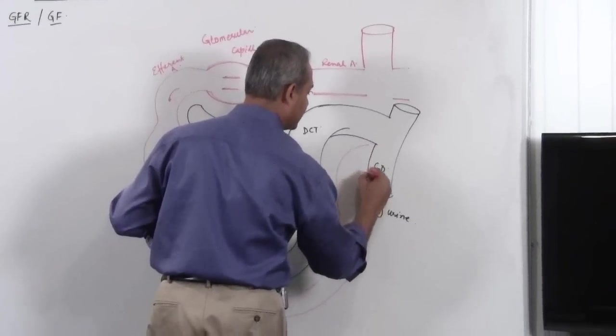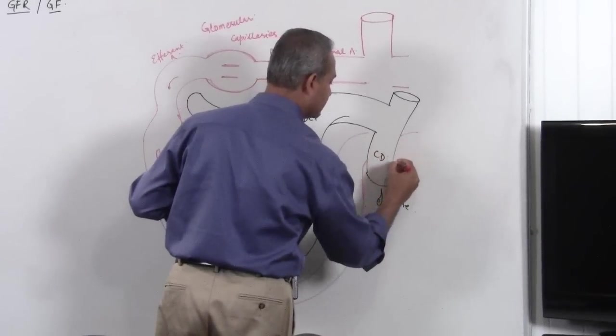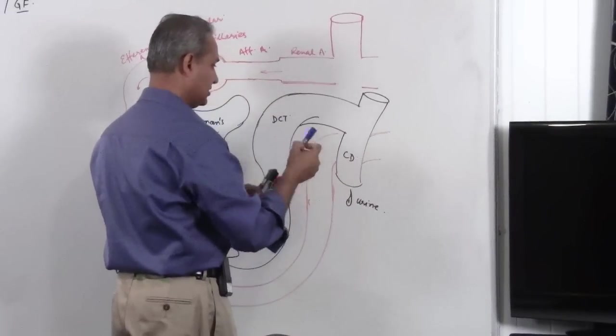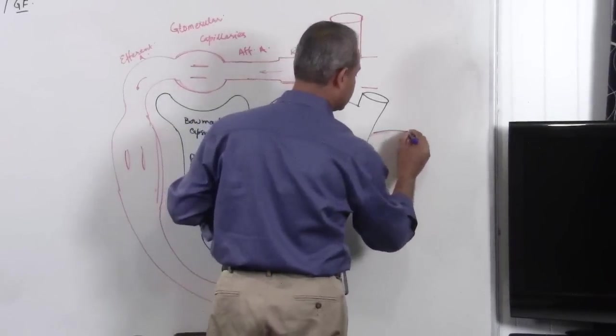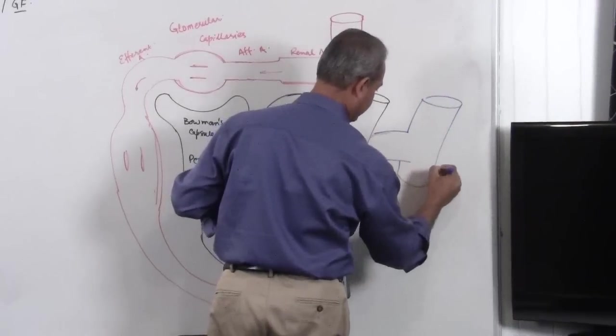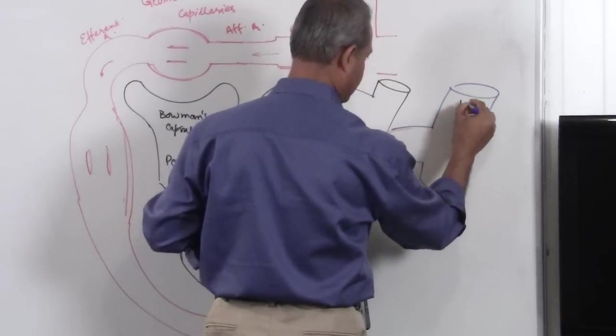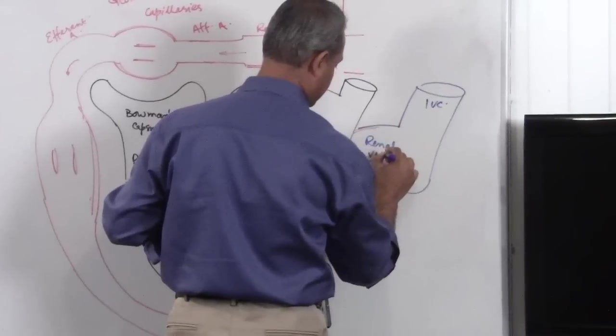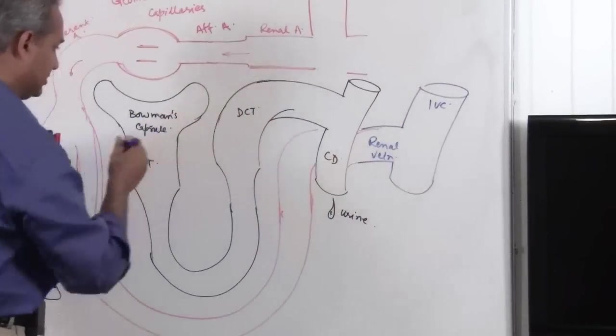These peritubular capillaries will become venous and then finally renal vein and renal vein will open up in the inferior vena cava.